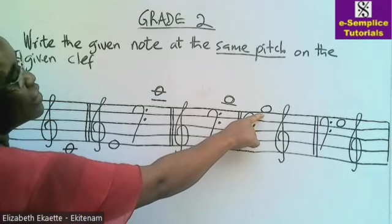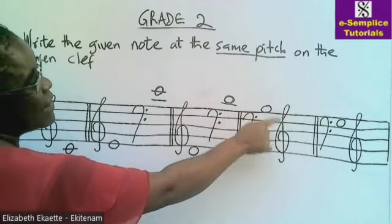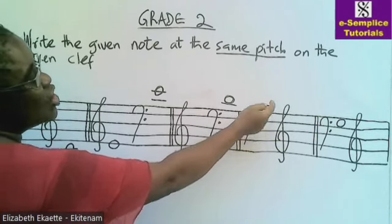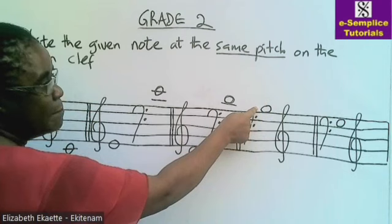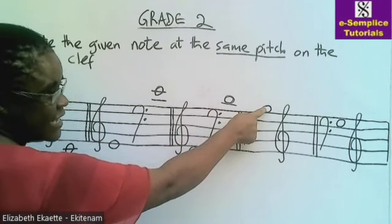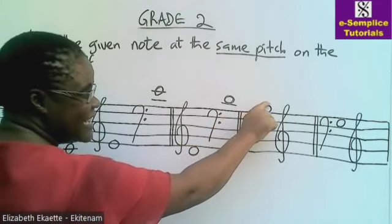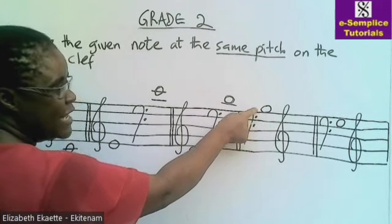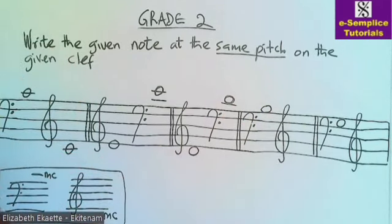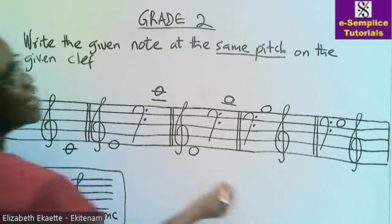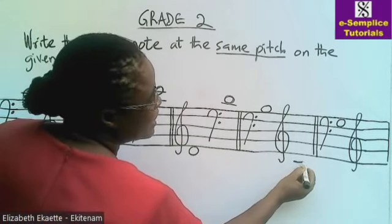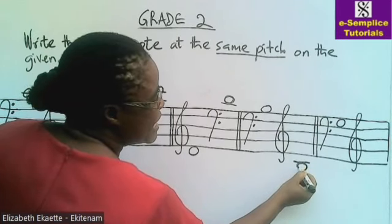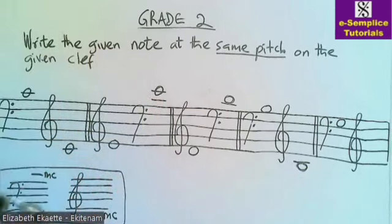Next question: you are given a note on the bass clef and asked to rewrite it on the other clef. This is B below middle C, because middle C is the ledger line on top of this note. Come to the treble clef and look for B below middle C. Put your middle C first — that's middle C — and the note below C is B. So this is B below middle C.